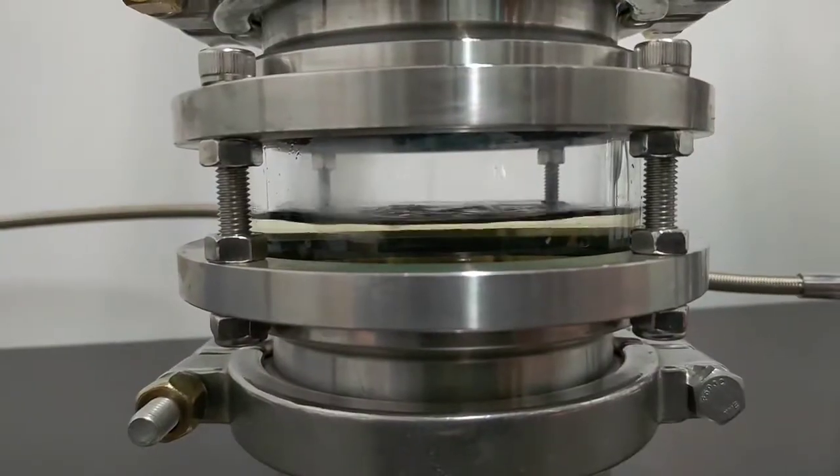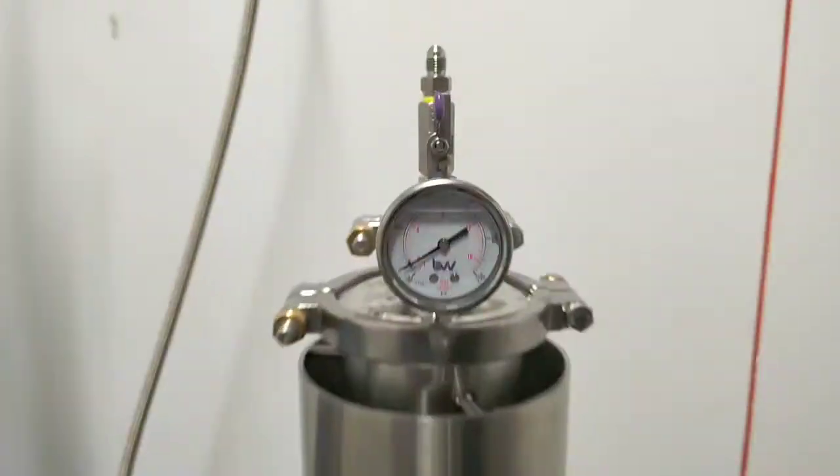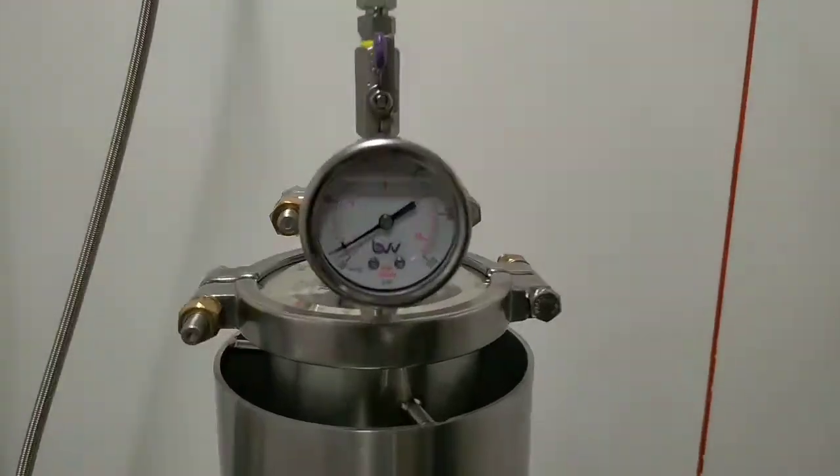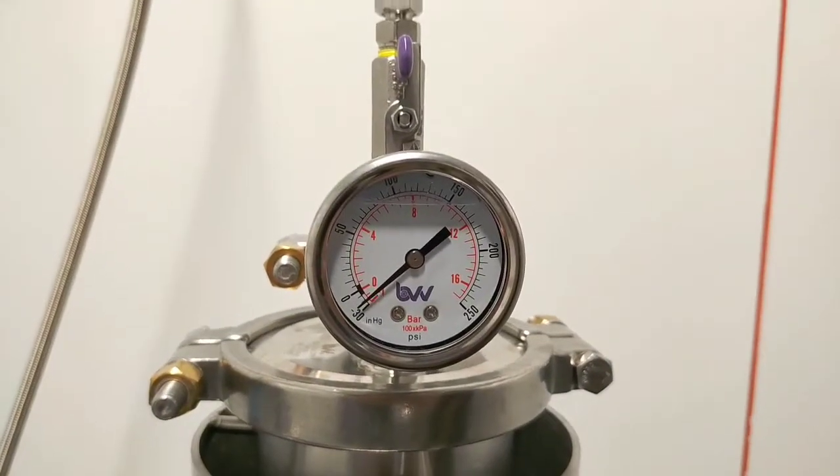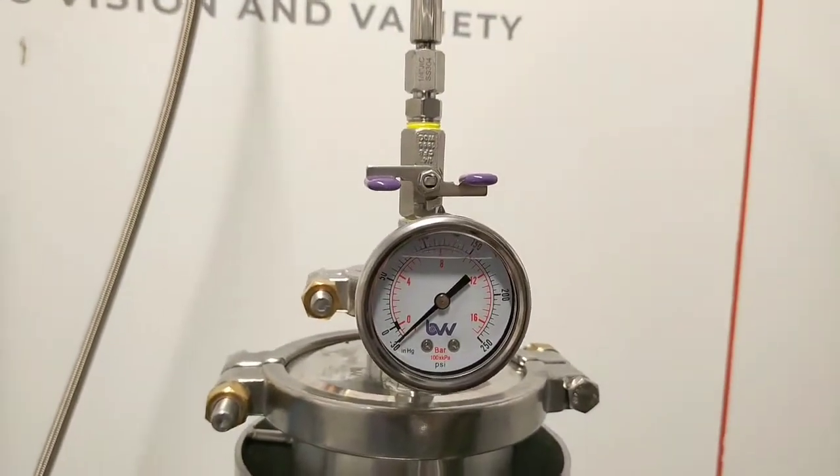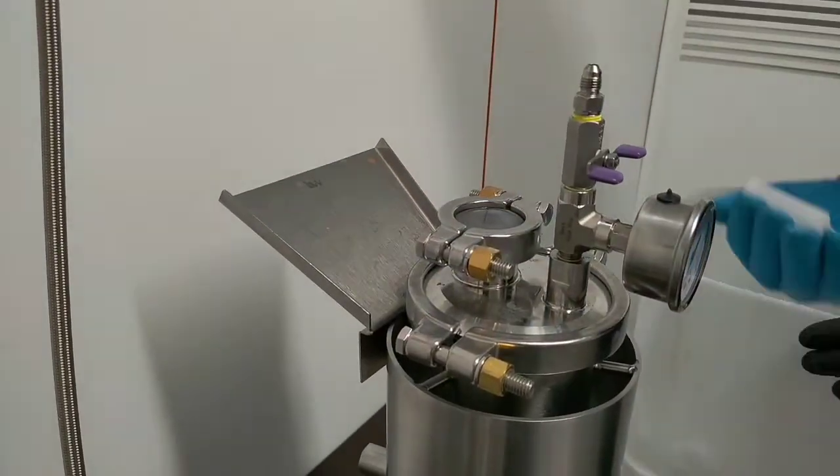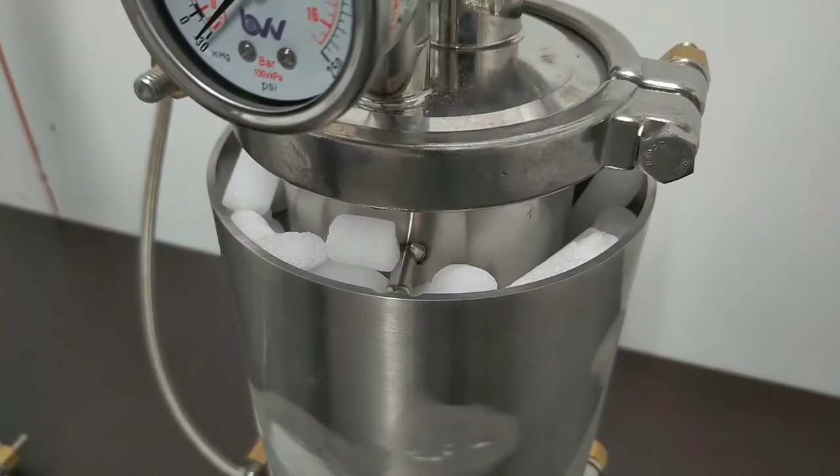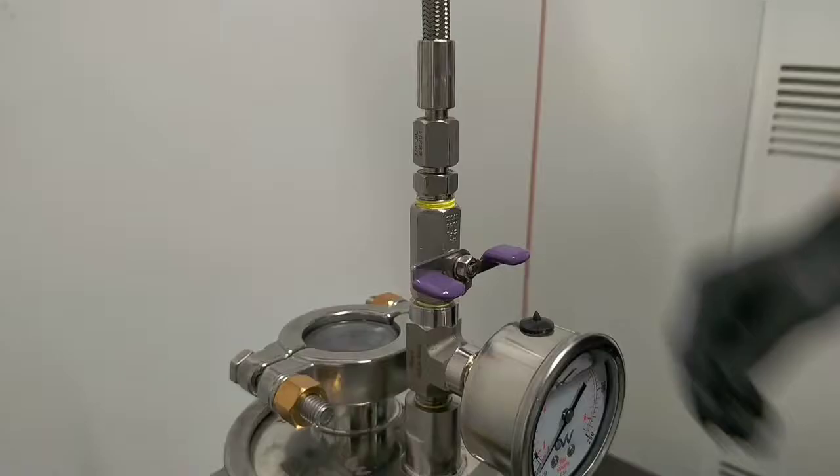Once the solvent tank is completely empty, purge it to atmosphere and pull the solvent tank under vacuum. Proceed to load the sleeve with dry ice, attach your recovery line, and tighten the line.